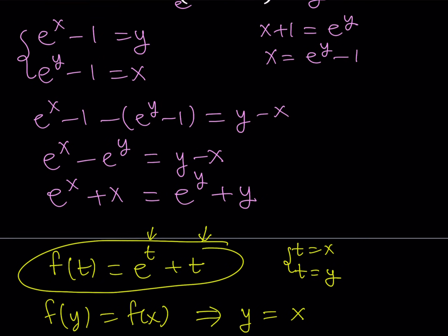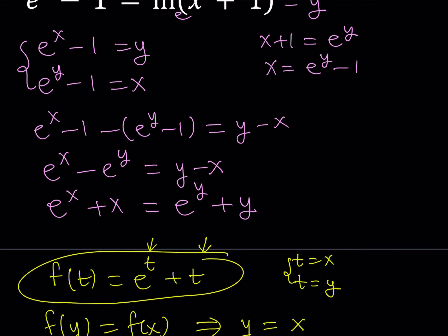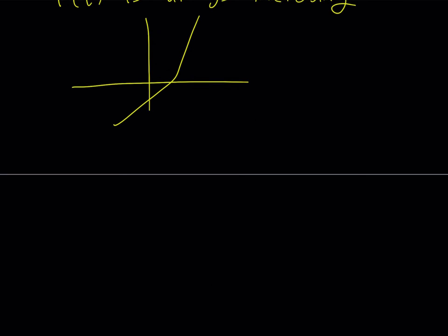All right? That's the conclusion we get from here. So going back to our equation, we can safely say that e to the power x minus 1 equals y, or we can write it as e to the power x minus 1 equals x. Okay, great. Now, we're going to be solving this equation now.